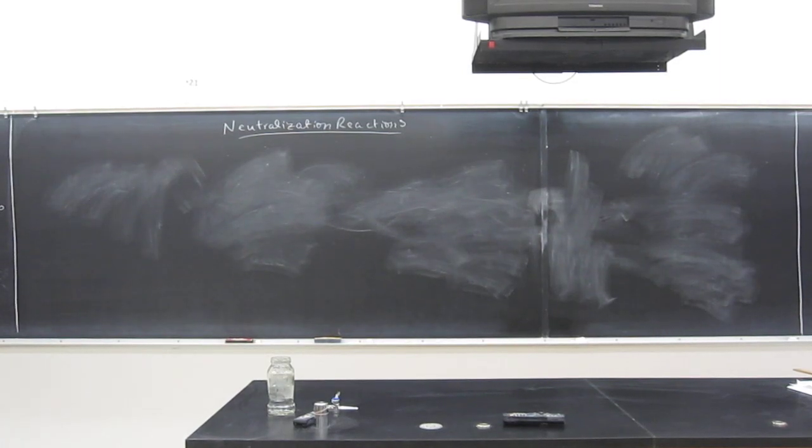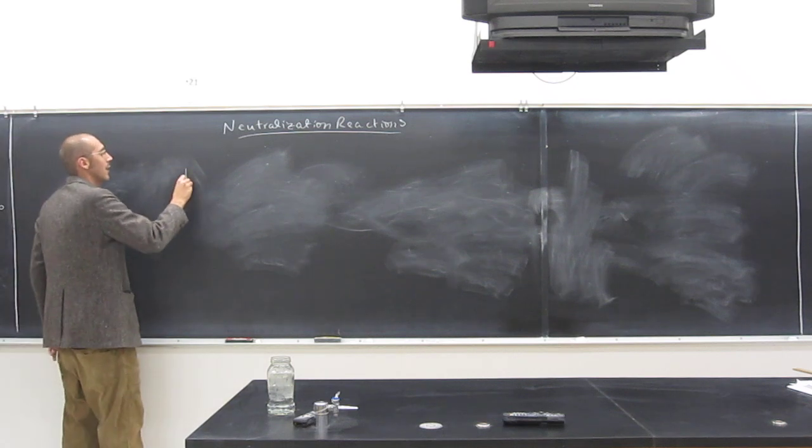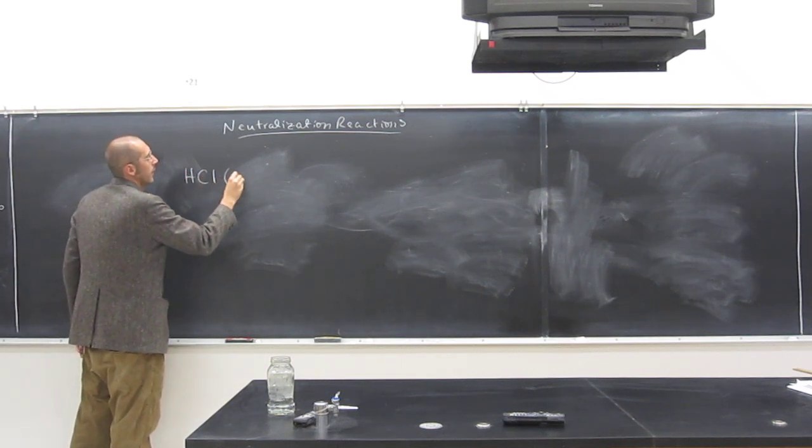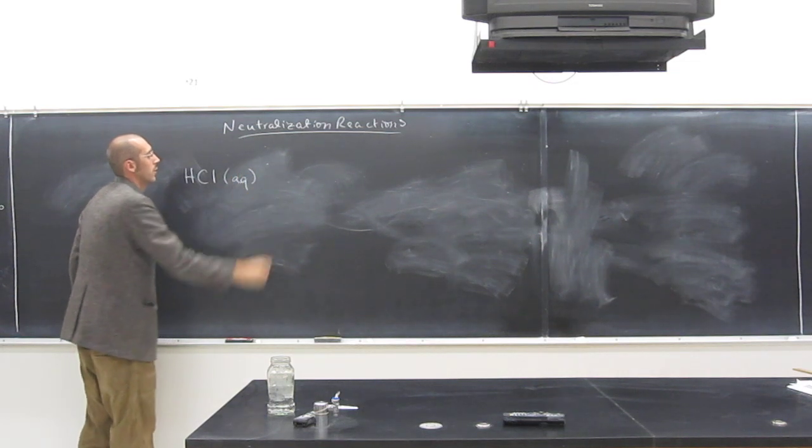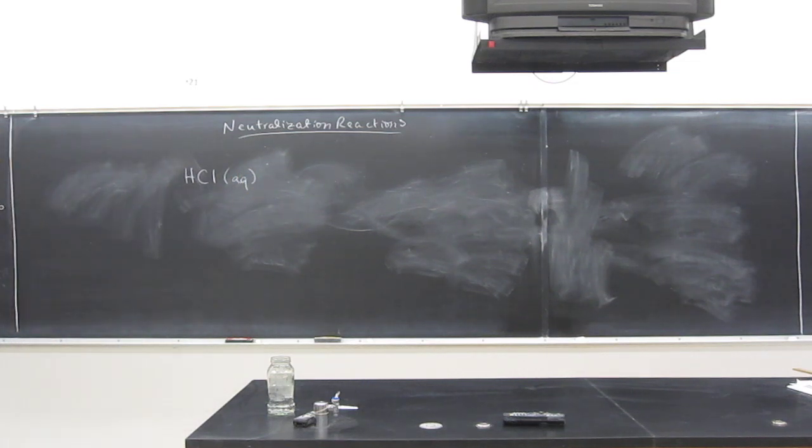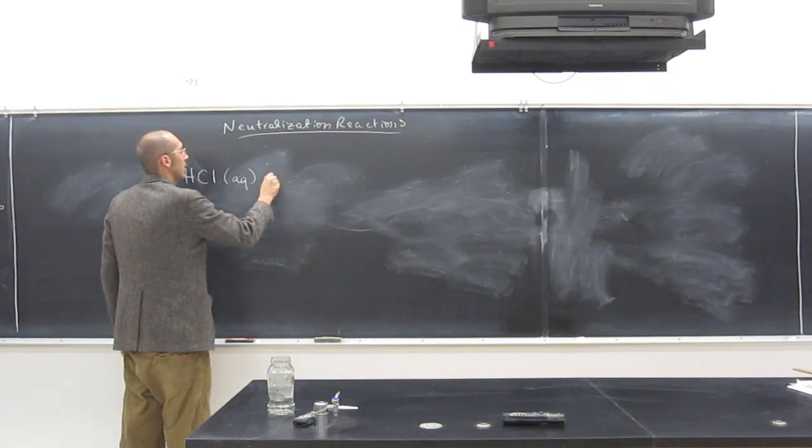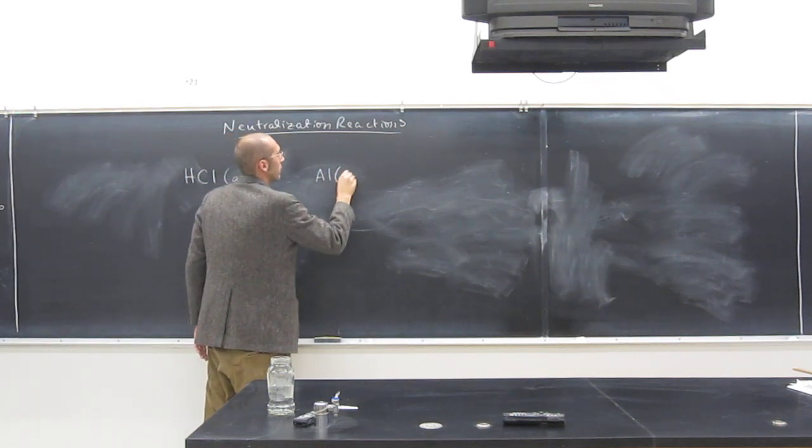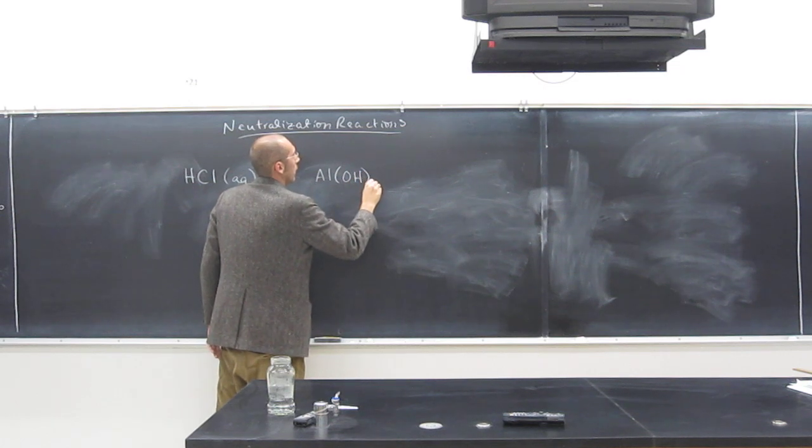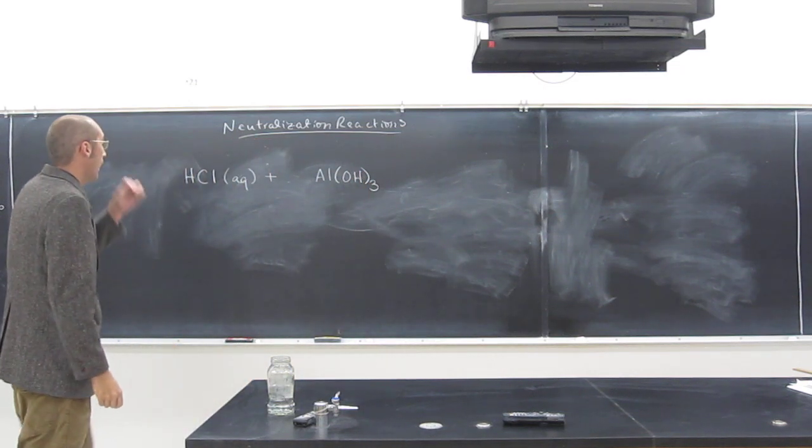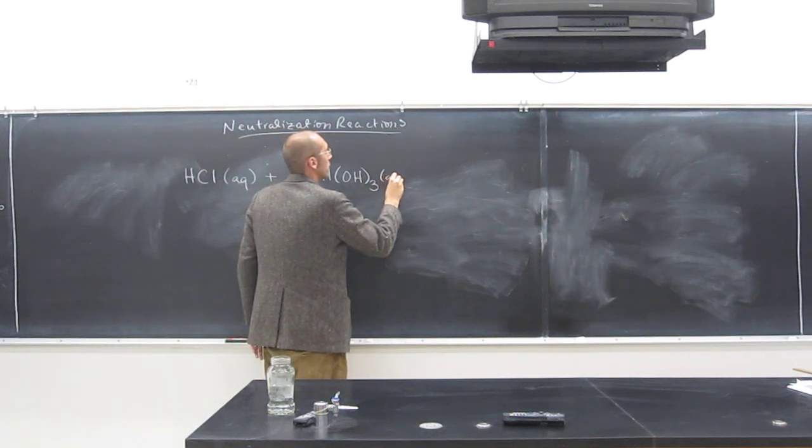So here let's consider the reaction of the neutralization of stomach acid with antacid tablets. Stomach acid is essentially this molecule HCl, and when we're doing acid-base reactions you want to put that aqueous so you'll remember to break that up into its ions. And the antacid tablet we're using is effectively aluminum hydroxide, and we'll just say aqueous as well.